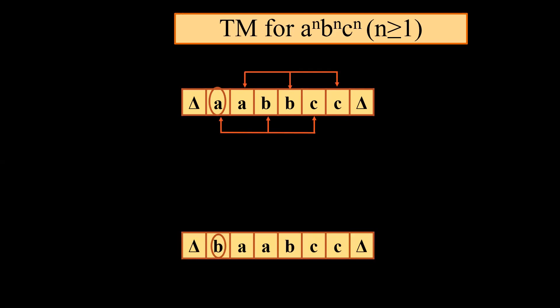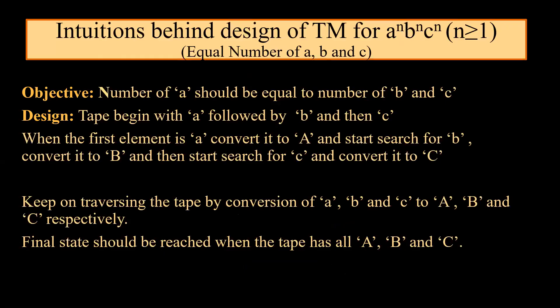If we say the tape has double A and double B and double C, the count of A, B, and C are each two — but is this input correct if the order is wrong? Of course not, because B should follow A and C should follow B. We should not have B followed by A. The major objective is that the number of A should equal the number of B, which should further equal the number of C, and the tape must begin with A followed by B and then C.